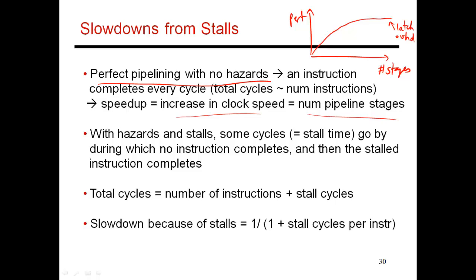Now when you have hazards and stalls, there are some cycles where nothing actually finishes. So you bring in instruction one, then instruction two, but it gets stalled for, say, two cycles. And then it proceeds ahead and finishes. So two cycles go by where nothing useful gets done. So now the total number of cycles equals the number of instructions plus the total stall cycles. So CPI, which is cycles per instruction,